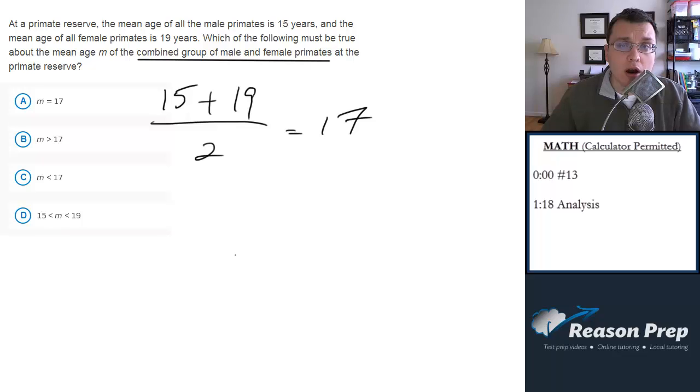because we don't know about the distribution of males and females. So if there's an equal number of males and females, then yes, the mean will be 17, so that could be true.